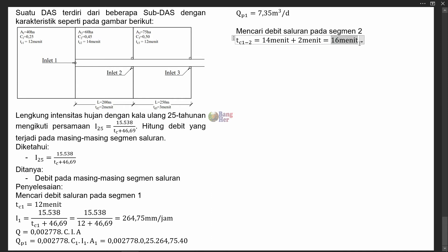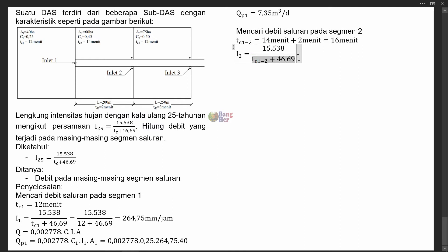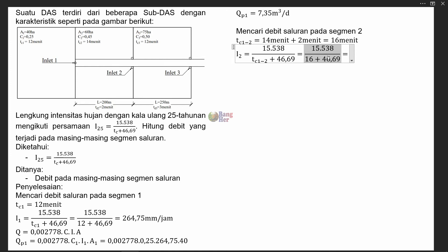Dengan mengetahui waktu konsentrasi, kita bisa mencari intensitas hujan menggunakan persamaan yang sudah diketahui. Intensitas hujan di segmen 2 adalah I2 = 15.538 / (TC2 + 46,69). Kita input nilainya, TC atau waktu konsentrasi pada segmen 2 adalah 16 menit. Kalau dihitung, kita akan memperoleh intensitas hujan pada segmen 2 sebesar 247,85 mm per jam.